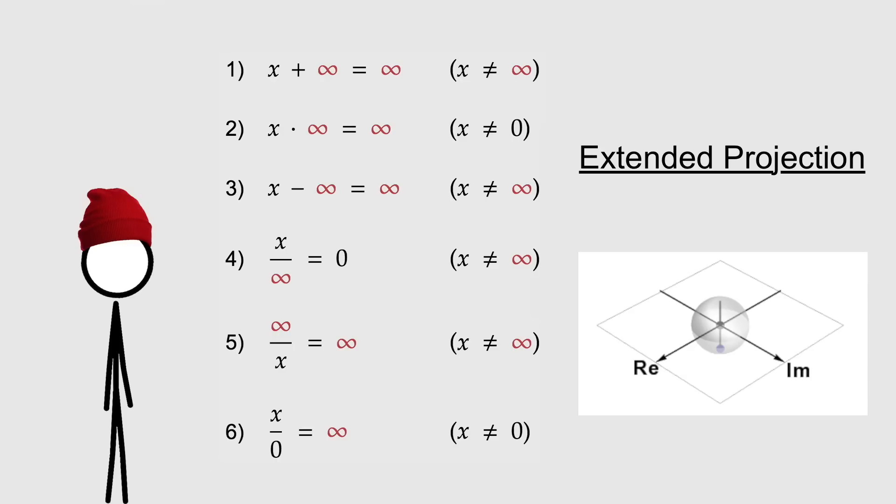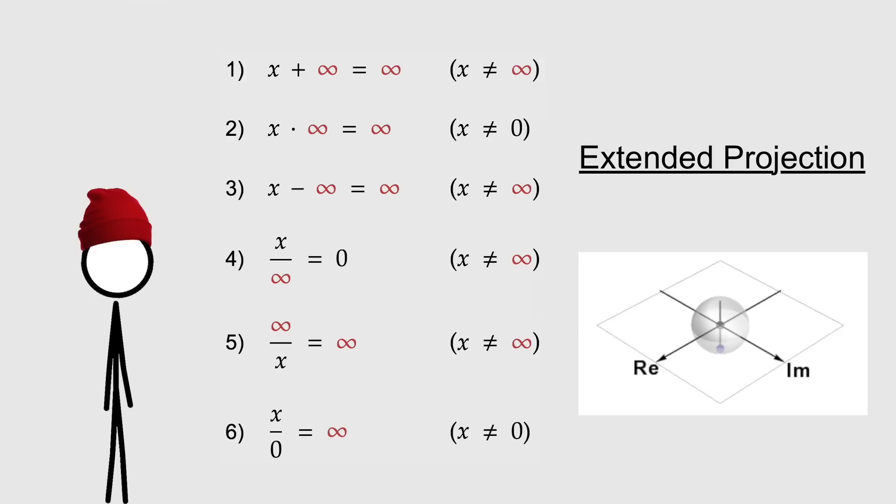That's it for extended projections. Now you know how to divide any number by zero, except for zero itself. But that's not really satisfactory now, is it? Might as well stick to standard arithmetic if we're going to have exceptions. No, either we go all the way, or we don't go at all. No compromises. Ooh, okay. Well, in that case, we need to create a little something called a wheel algebra. Part two. See you there.